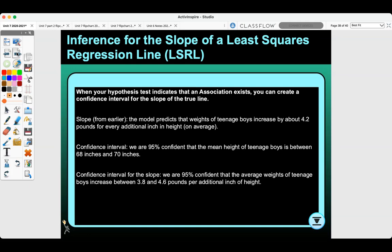The slope from earlier, the model that predicts the weights of teenage boys, so this is from the example earlier, increases about 4.2 pounds for every additional inch in height on average. In our confidence interval, we are 95 percent confident that the mean height of teenage boys is between 68 inches and 70 inches. However, the confidence interval for the slope would be: we are 95 percent confident that the average weight of teenage boys increases between 3.8 and 4.6 pounds per additional inch of height.